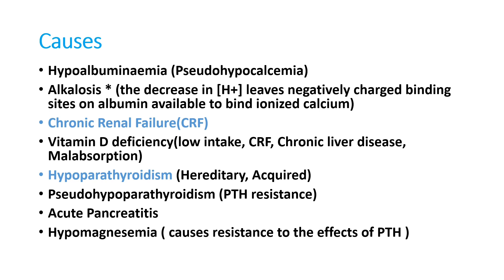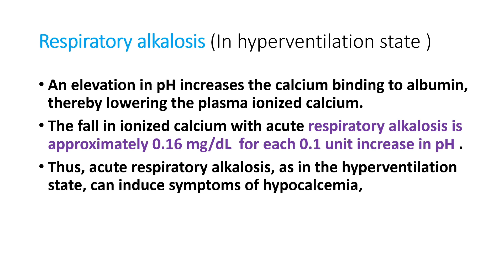Resistance to the effects of PTH can also occur. Acute pancreatitis can precipitate calcium soaps in the abdomen, producing hypocalcemia. Respiratory alkalosis — especially hyperventilation-induced — causes hypocalcemia because an elevation in pH increases calcium binding to albumin, lowering plasma ionized calcium. The fall in ionized calcium with acute respiratory alkalosis is around 0.16 mg/dL for each 0.1 unit increase in pH.